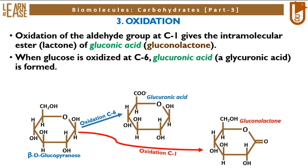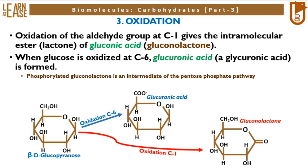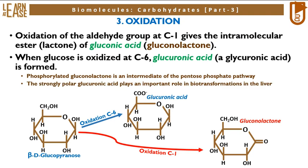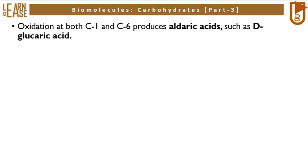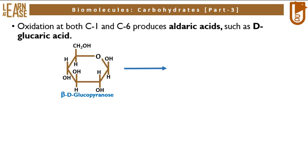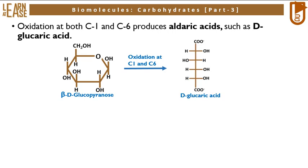Phosphorylated gluconolactone is an intermediate of the pentose phosphate pathway. The strongly polar glucuronic acid plays an important role in biotransformations in the liver. Oxidation of glucopyranose can occur at both C1 and C6 of the same molecule together, yielding alderic acids such as D-glucaric acid. The reaction shows oxidation of beta-D-glucopyranose at C1 and C6 positions to yield D-glucaric acid, which has an open chain structure.